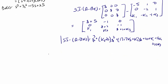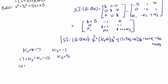Now we compare this to our desired characteristic equation and solve for k1, k2, and k3. k3 + 8 = 7, so k3 = -1. Then 17 + k3 + k2 = 15, so k2 = -1 + (-1) gives k2 = 5. And 10 + k1 + 5k2 + 10k3 = 25, so k1 = 0. Finally, our answer is K = [0, 5, -1].